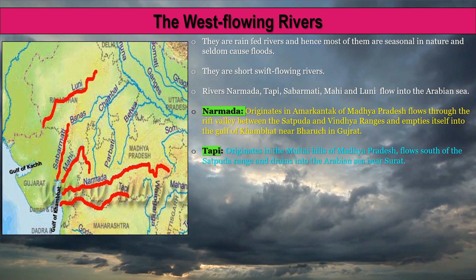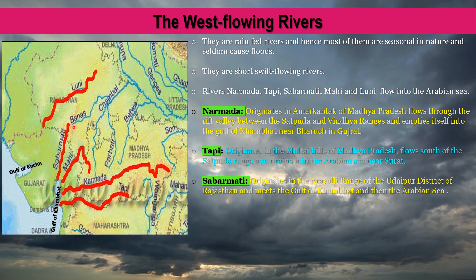The Sabarmati River originates in the Aravali range of the Udaipur district of Rajasthan and meets the Gulf of Khambat before entering the Arabian Sea.